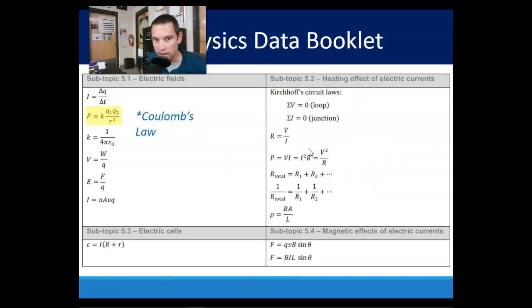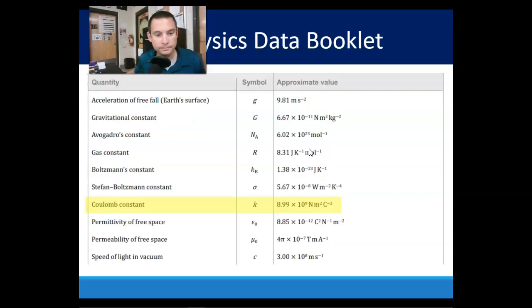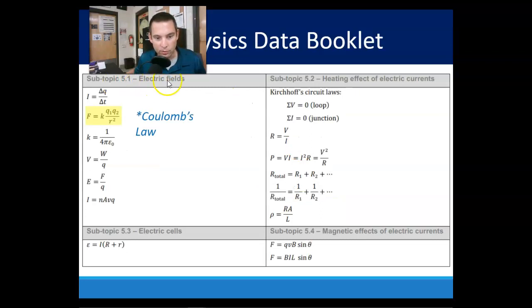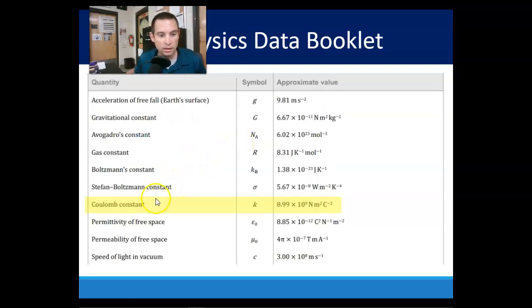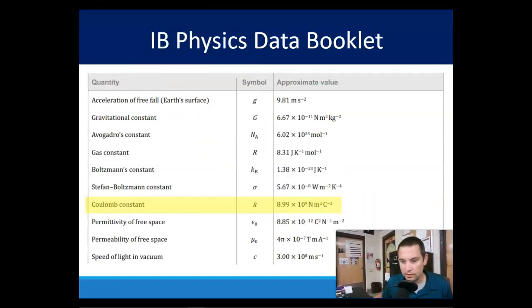There's Coulomb's law on your data booklet in 5.1 electric field. Coulomb constant is given to you as 8.99 times 10 to the ninth. It's the one that is roughly, if you took it to a one-sig fig, 9 times 10 to the ninth. So 9e9 if you like, to shorten it, to have something to memorize.